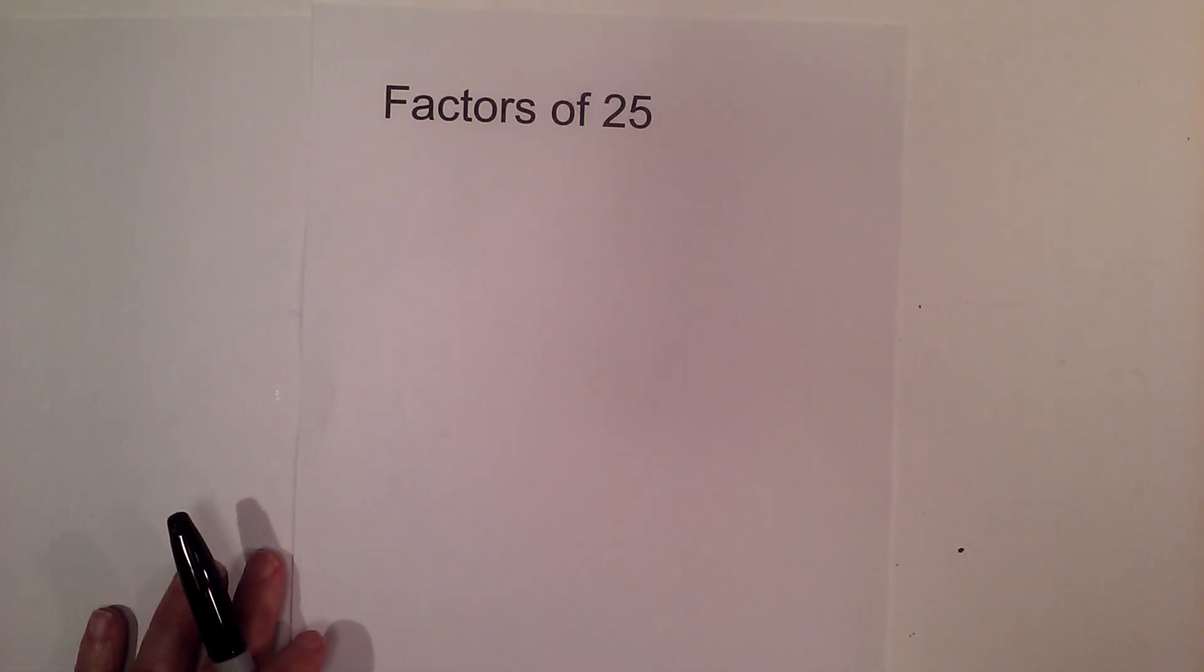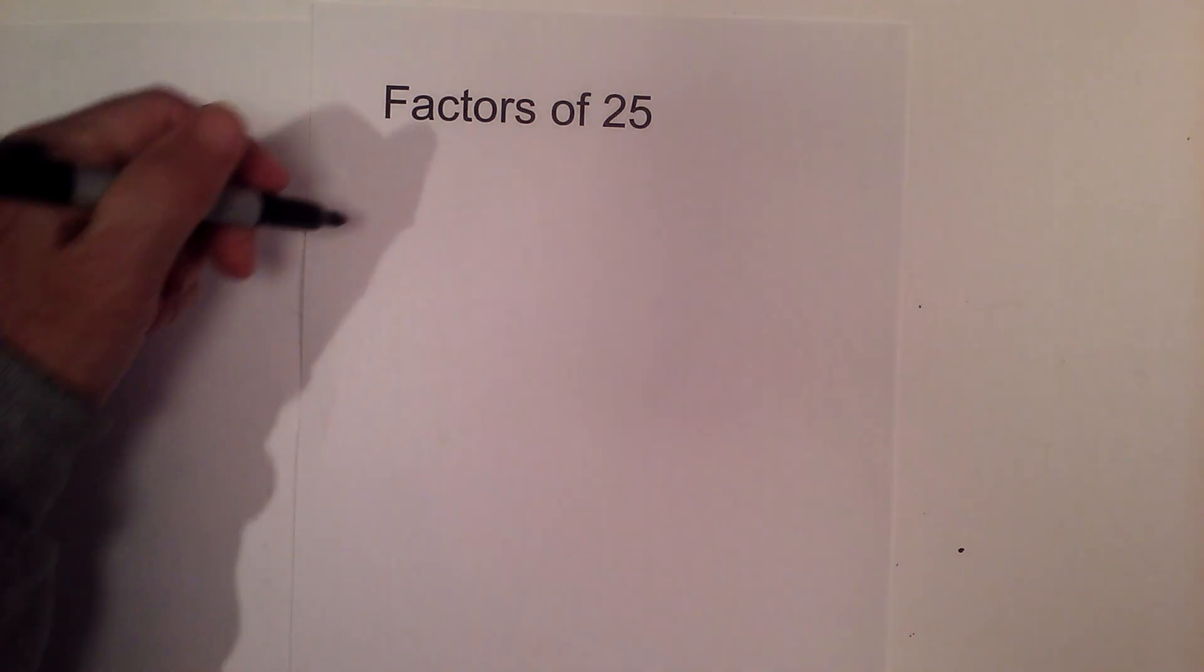In this video let's find the factors of 25. Here's how I like to find factors. I'm going to start with 1 times 25 and find the numbers in between that multiply together to equal 25.